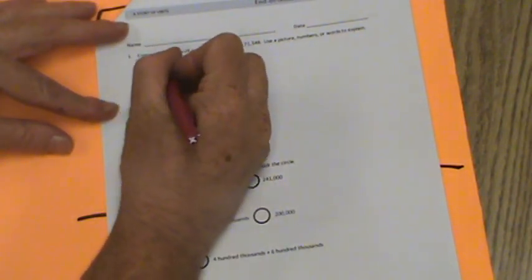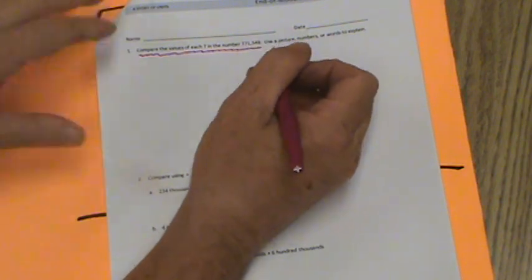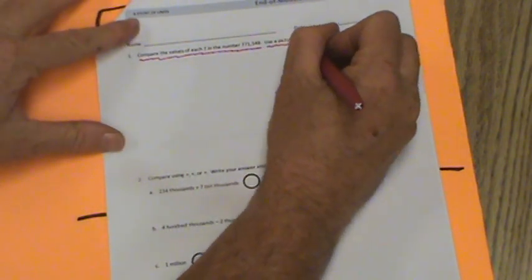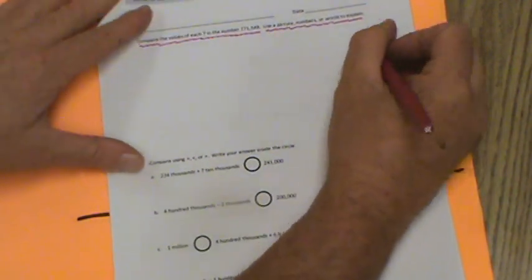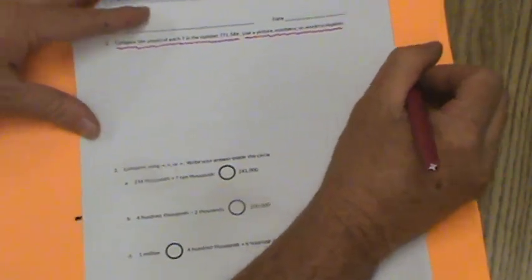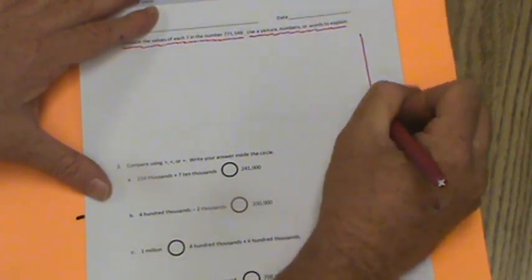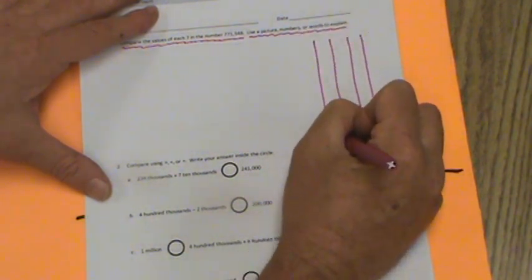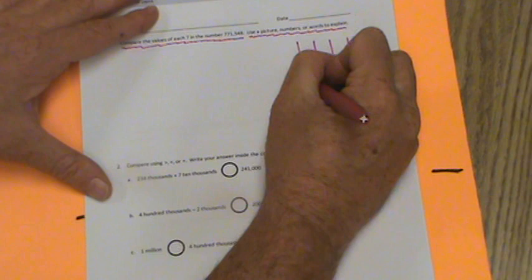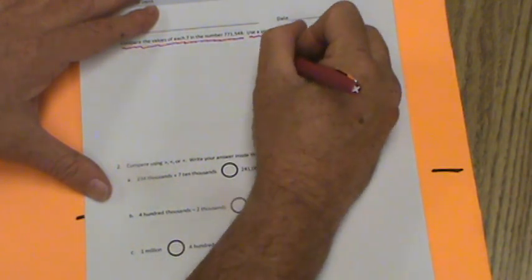It's asking us to compare the values of each seven in the number 771,548. Use a picture, numbers or words to explain. So we're going to do this in a couple of different ways. Let's start off with a place value chart over here. Ones, tens, hundreds, thousands, ten thousands, one hundred thousands.